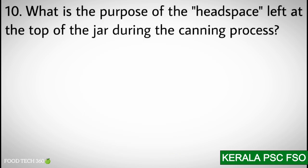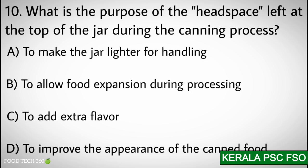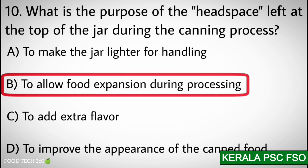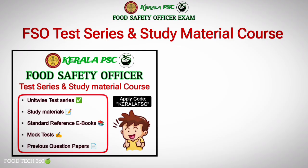Q10. What is the purpose of the headspace left at the top of the jar during the canning process? Options: A) To make the jar lighter for handling, B) To allow food expansion during processing, C) To add extra flavor, D) To improve the appearance of canned food. Correct answer: B) To allow food expansion during processing.